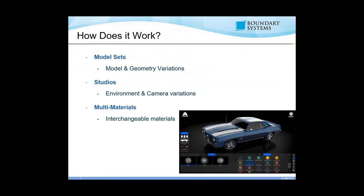How does the KeyShot Configurator work? The configurator works using a combination of at least three different items inside of KeyShot 7, and all three of these are new to KeyShot 7 — each one deserves its own webinar because they're so powerful. We'll talk at a high level on all three. The first is model sets. Model sets replaced what was historically called scene sets in KeyShot 6 and older. Model sets allow you to show model and geometry variations very quickly and easily within the same scene — you can show or hide different variations of geometry and still get the complete picture of what you're looking at.